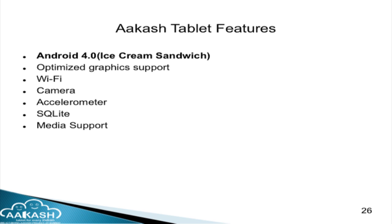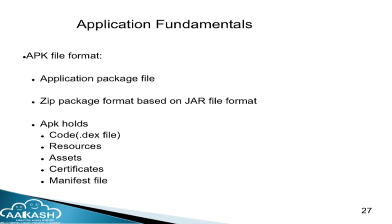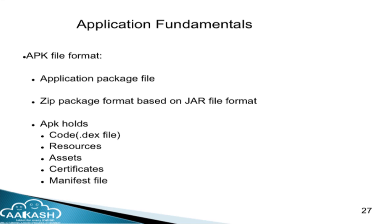These are our Akash tablet features: ICS, optimized graphics support, Wi-Fi — which you must have already connected during the clicker quiz — camera, accelerometer, SQLite, and media support. Regarding application fundamentals: when we install our application on the Android device it is in the format of .apk, which is nothing but an Application Package File. It is more like a .jar file in Java — a compressed zip package format. Your .apk gets created by: Java source code gets converted to .dex, and after .dex it gets converted to the .apk.